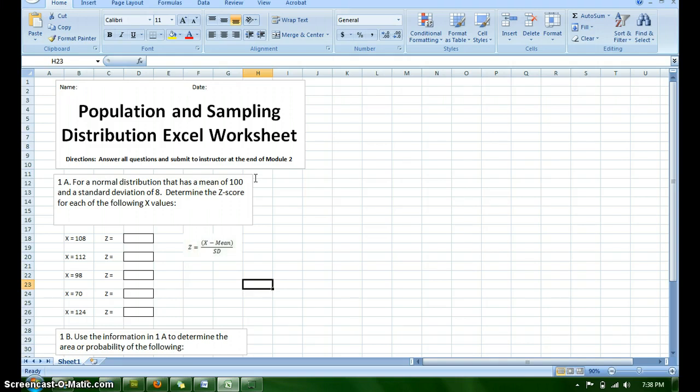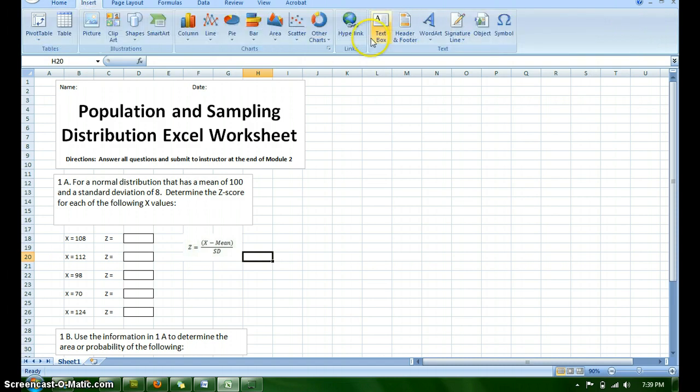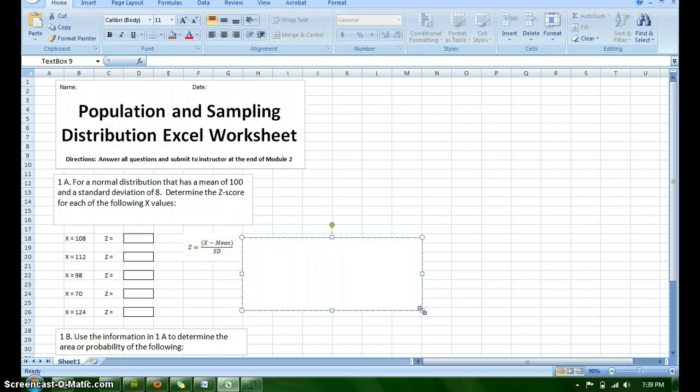For starters, question A is asking you for a Z-score, and I pasted in the formula here that you would need to calculate a Z-score. Basically, you are just looking to take the X value minus the mean over the standard deviation. To show your work for this, I think the easiest way would be for you to insert a text box. So you click Insert, Text Box, and then you can create the text box anywhere you want and show me your work in here.